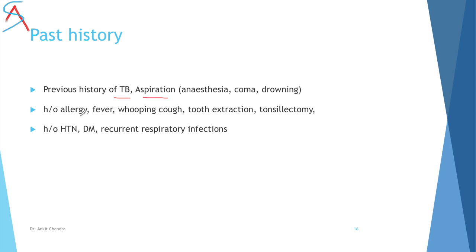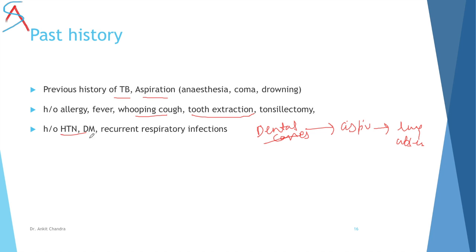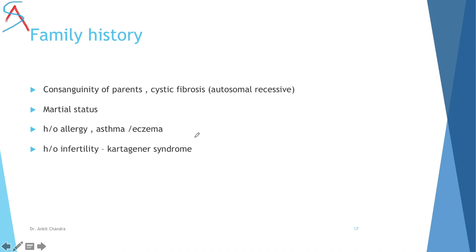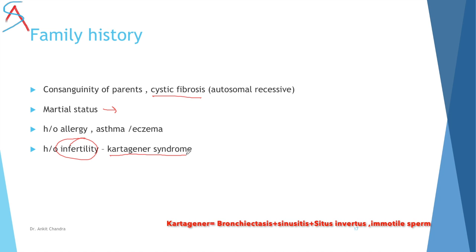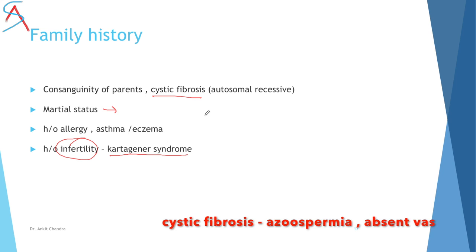Ask about past history of tuberculosis, aspiration, allergies, fever, whooping cough, or dental caries and tooth extraction — aspiration from dental procedures can cause lung abscess. Ask about diabetes, hypertension, and ongoing treatment. Ask about respiratory infection history. In family history, ask about cystic fibrosis (autosomal recessive) and about marital status — infertility may suggest Kartagener's syndrome or cystic fibrosis (azoospermia, absent vas deferens).